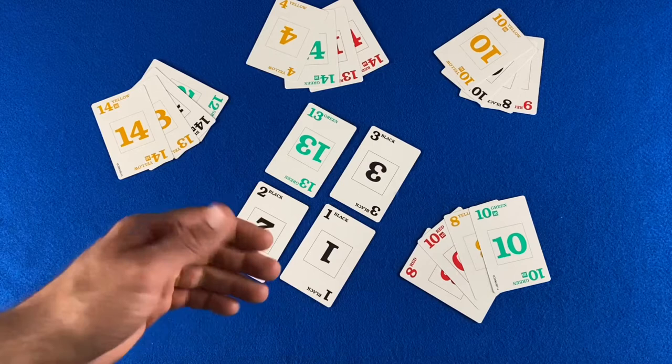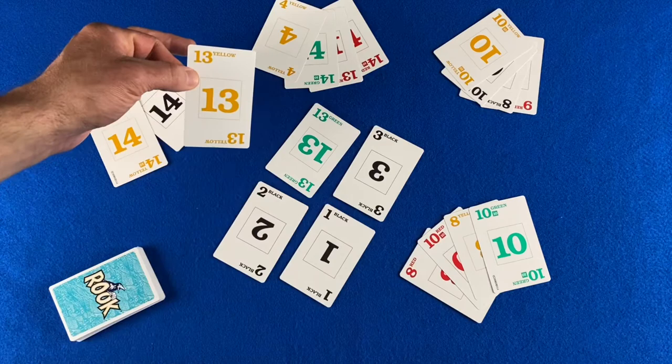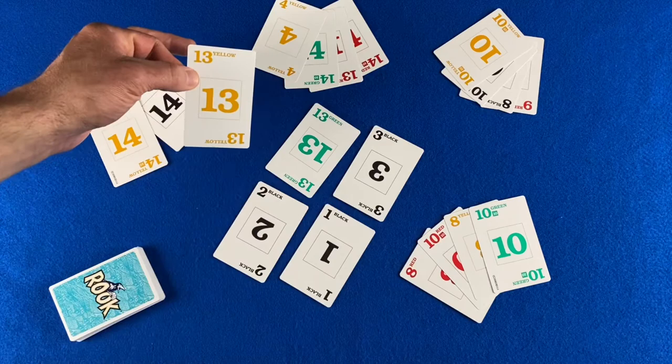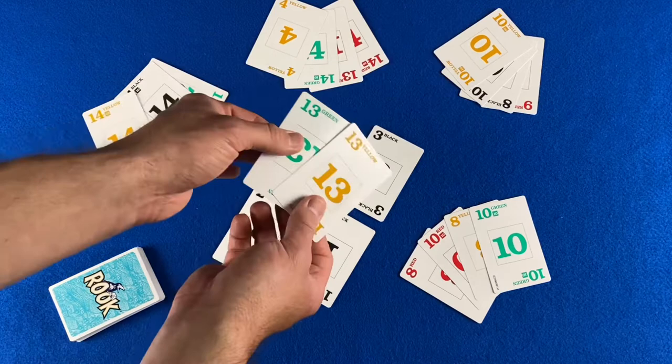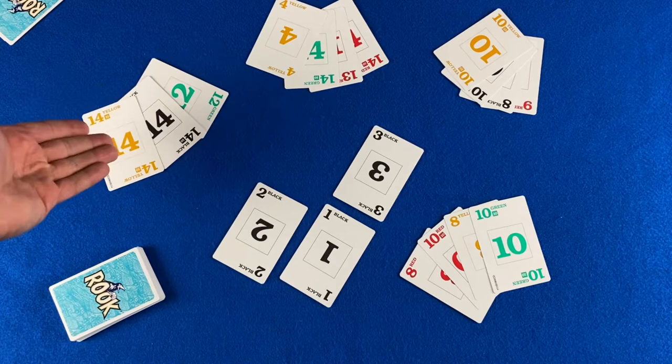The first way is to capture a single card by matching the number. Here player one has a 13, so they can use that to capture the green 13. Take both cards and place them aside. And that would end this player's turn. They are only allowed to play one card per turn.